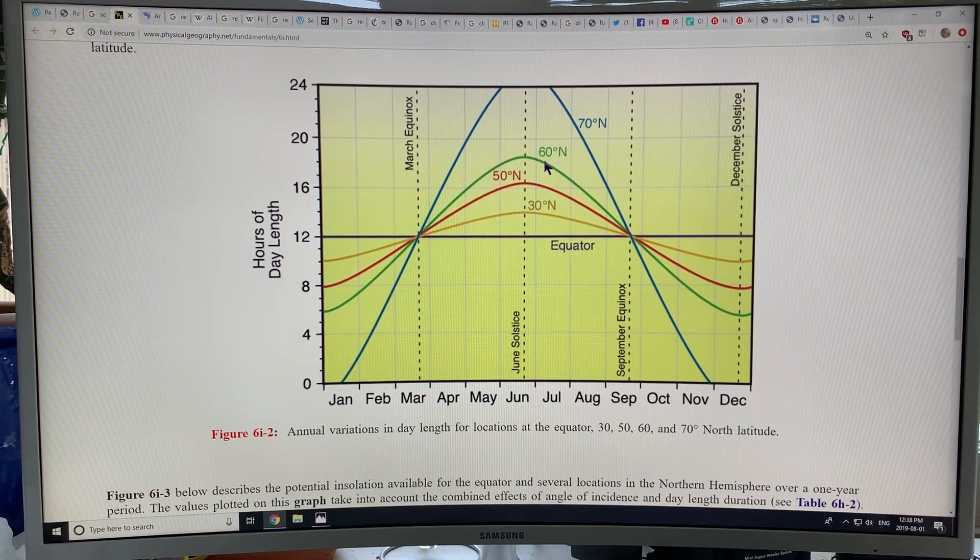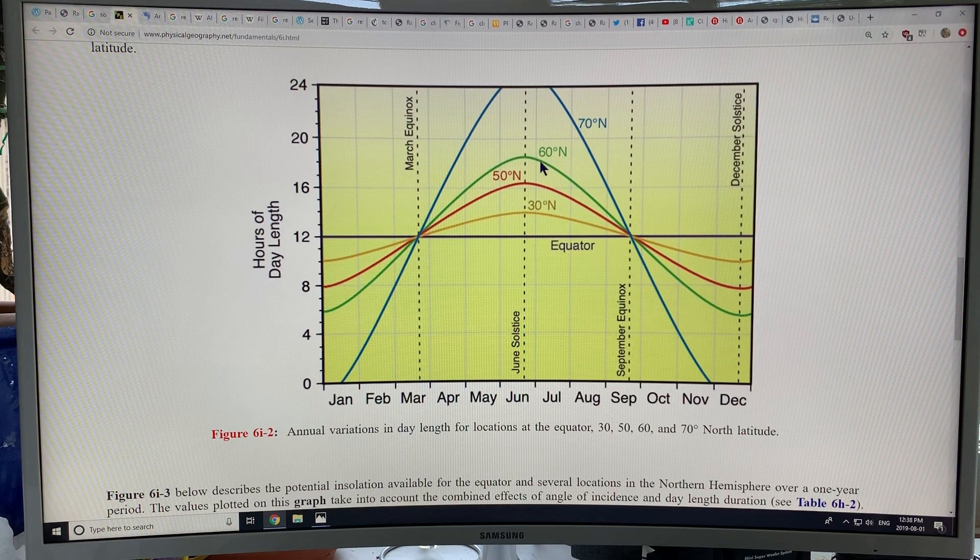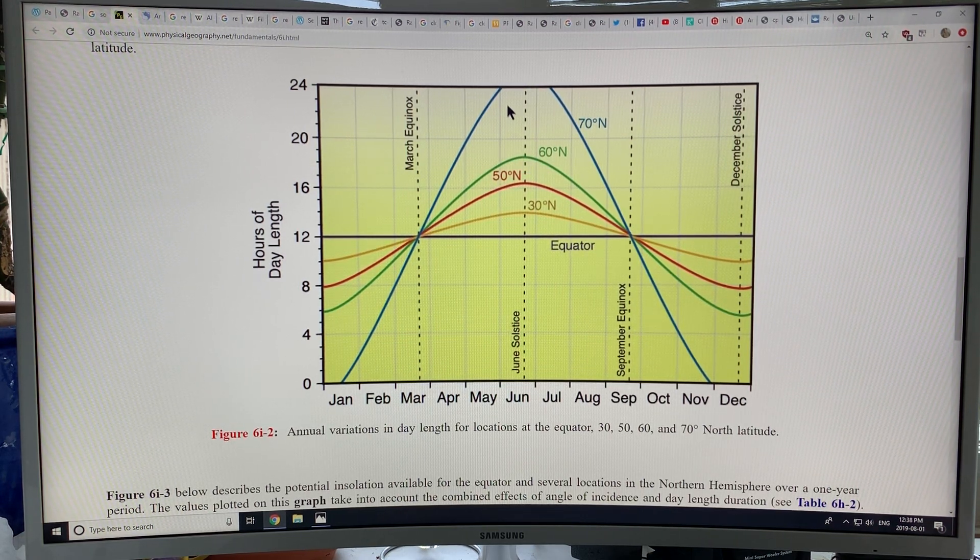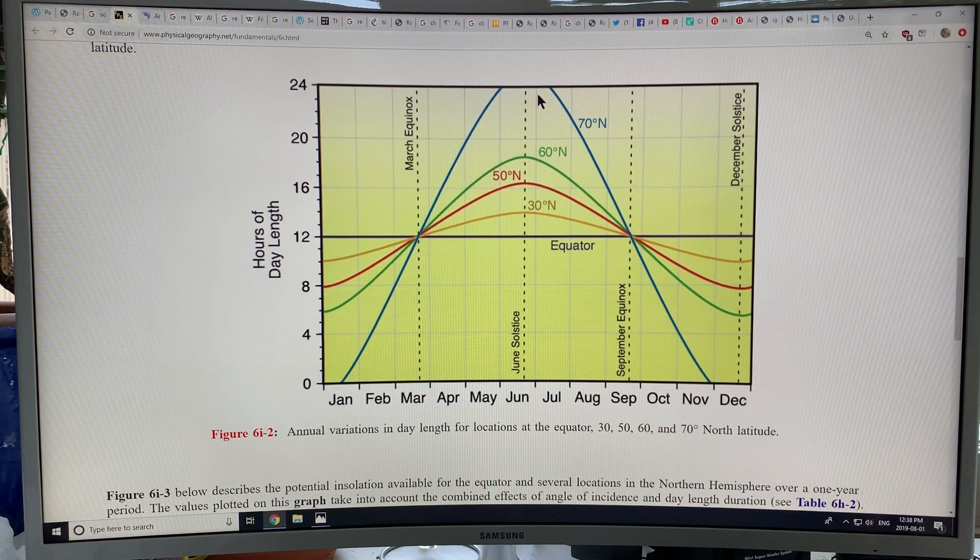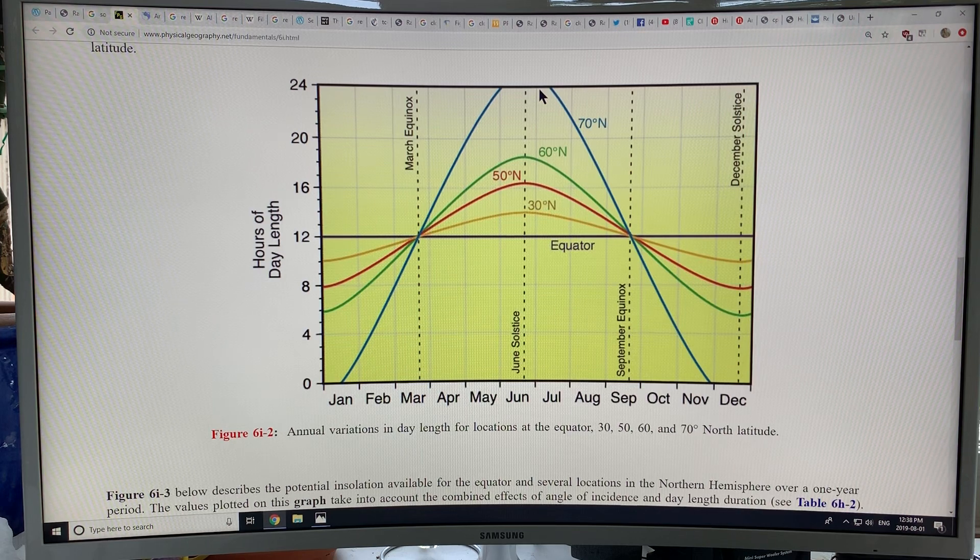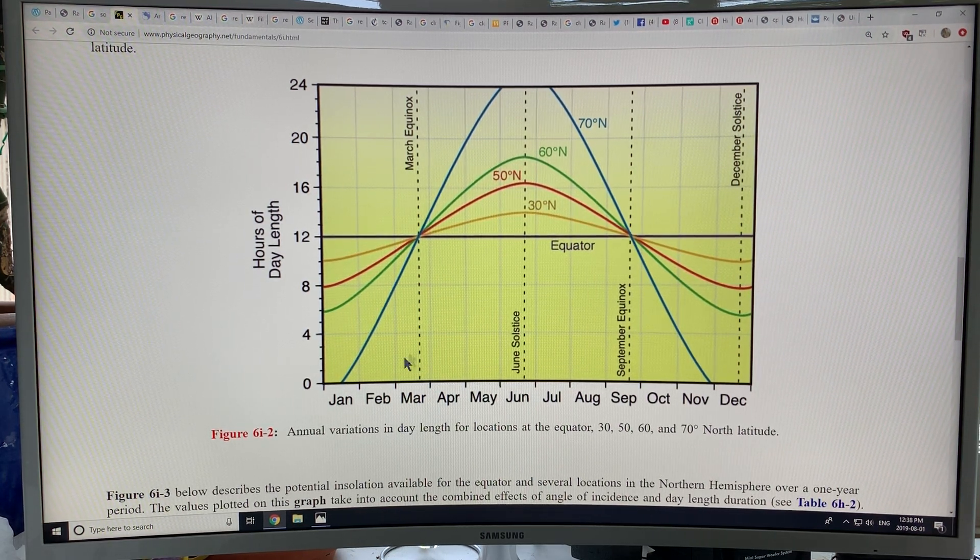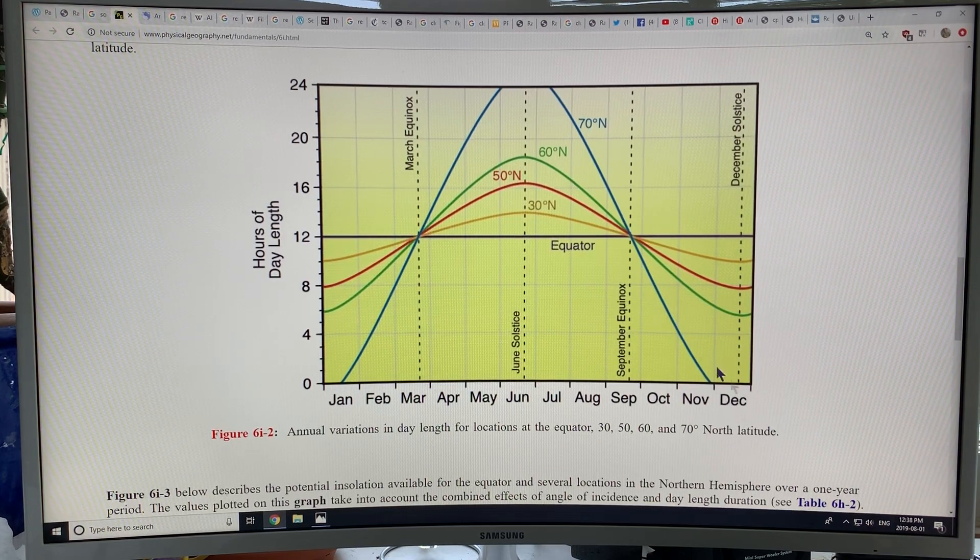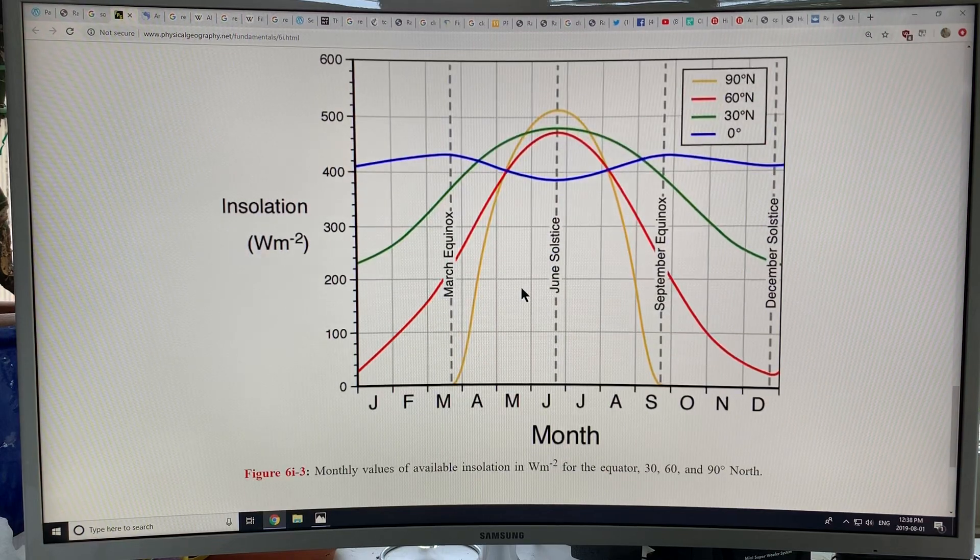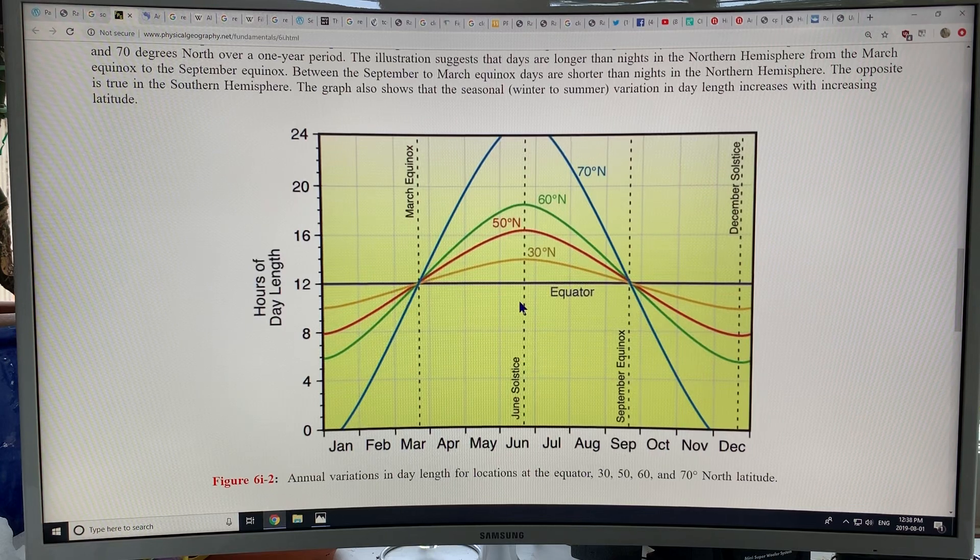And it goes right up to 70 degrees north. How do you define the Arctic? If you talk about the water north of 70 degrees or north of 60 degrees, you can see the corresponding increase. And what you notice is when you go high enough north, you get 24 hours of daylight at the June solstice, June 21st, and you get 24 hours of darkness. And if you go right up to 90 degrees, then this is what you get here. So this is the hours of day length.